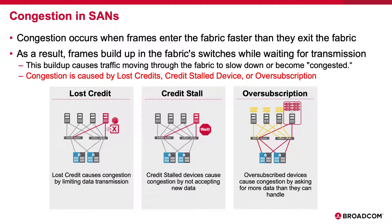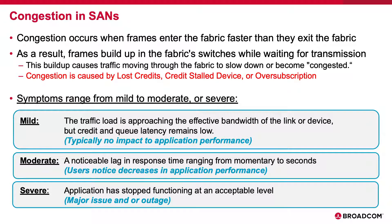The third case, over-subscription, is the most common in fiber channel SANs today, often occurring when you have multiple fiber channel generations in the same fabric. For example, an older 16-gig database server now has its database on a new, very high-performing 32-gig all-flash array, and when it does a large read or a table scan, it gets data so fast that it cannot take the frames off the fabric fast enough, and therefore congestion happens. Symptoms range from mild to moderate to severe, and the impact on applications is respectively from minimal to considerable to drastic.